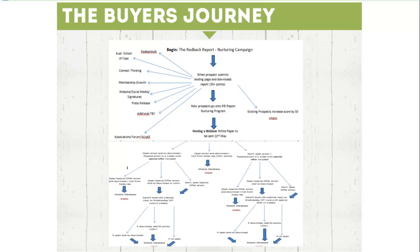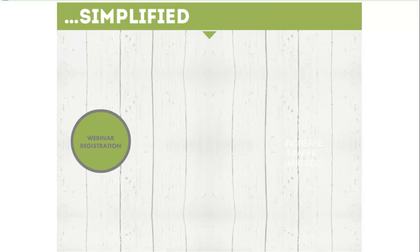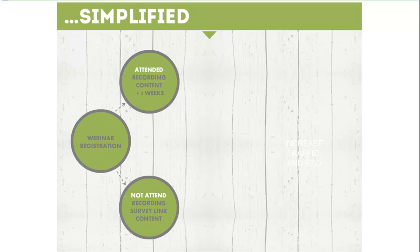Let's talk about the buyer's journey. This is just an example of how a nurturing campaign would work — a visual representation of how many behaviors someone can take when they register. Someone registers for a webinar: they might attend or they might not. If they attend, you might send them a recording and a piece of content over a two-week period. If they don't attend, you might send the recording plus a survey link and additional content over a four-week period, since it may be less urgent for them.